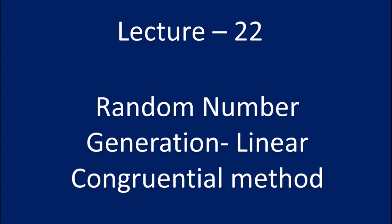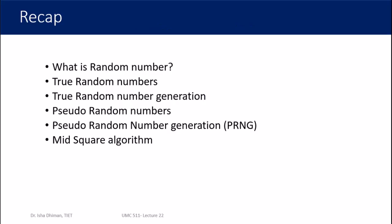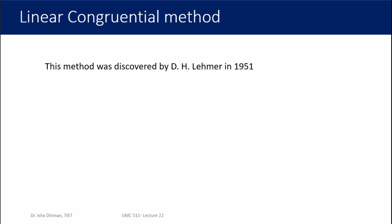Welcome to lecture 22 of Mathematical Modeling and Simulation. In this lecture we are going to look at random number generation and a particular method called the linear congruential method. In our last lecture we discussed true random numbers, pseudo random numbers, and pseudo random number generation (PRNG). We also discussed one technique for generating pseudo random numbers called the mid-square algorithm.